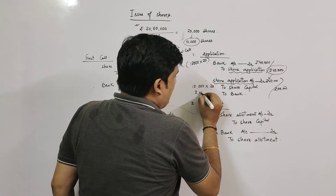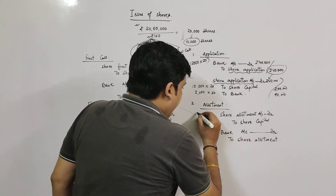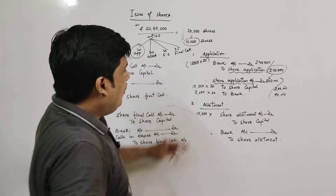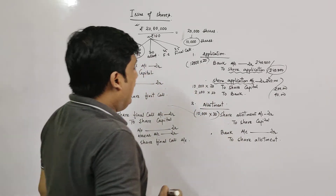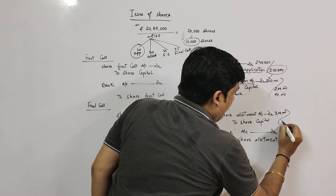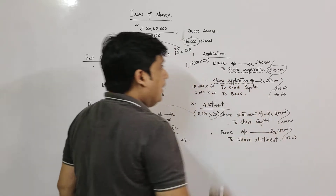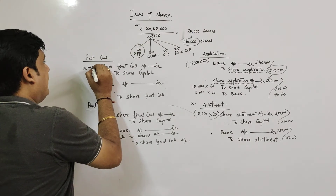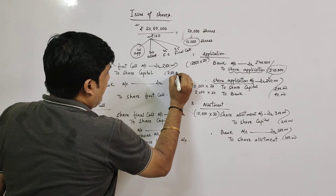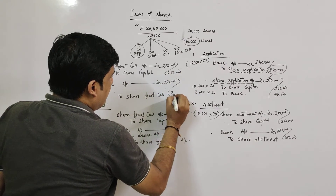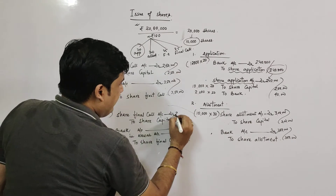For allotment, the number of shares remains 10,000 because we have already refunded the excess. Allotment has ₹30, so 10,000 × ₹30 = ₹3,00,000. Same ₹3,00,000 is transferred to bank. For first call: 10,000 × ₹25 = ₹2,50,000, and ₹2,50,000 goes to bank as well.